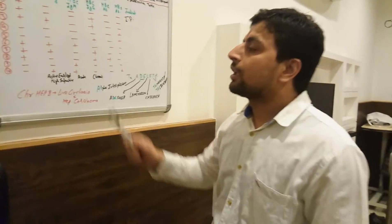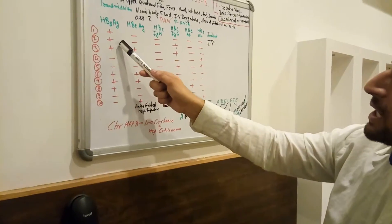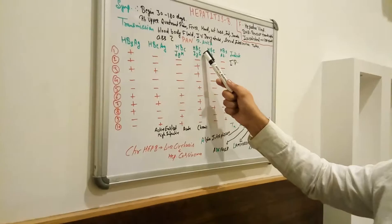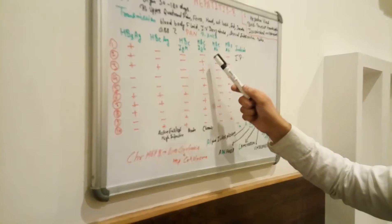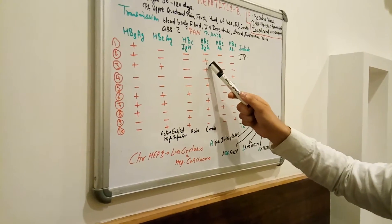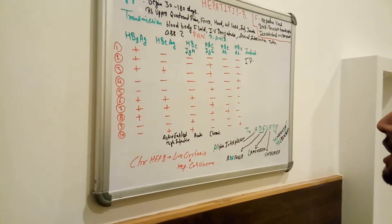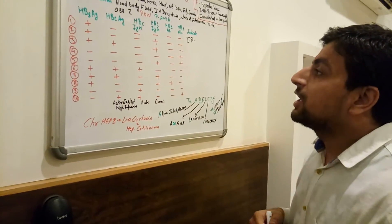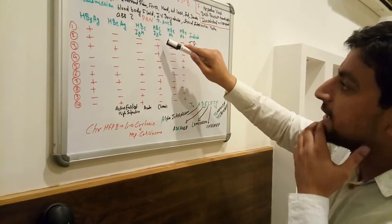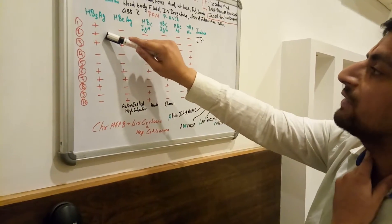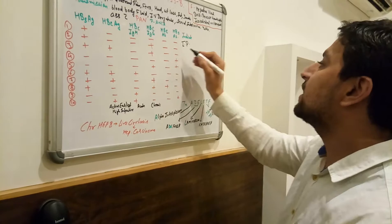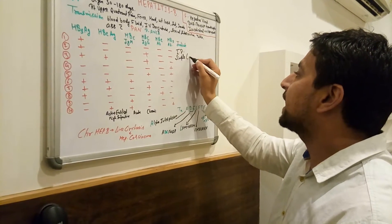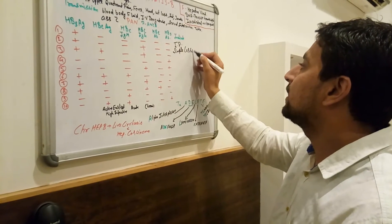Next question: if Hepatitis B surface antigen is positive and Hepatitis B core immunoglobulin G antibody is positive, what does it indicate? It indicates chronicity and infectivity. The patient is a simple carrier.